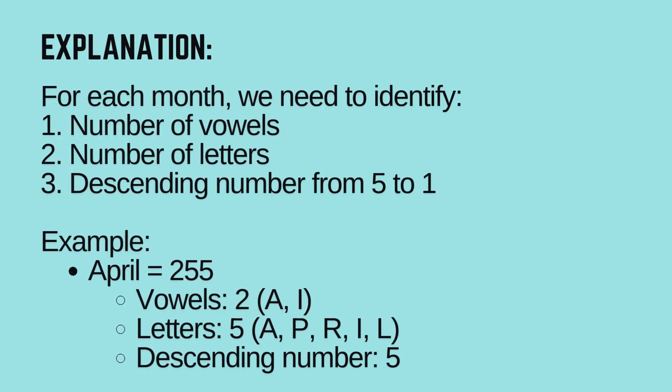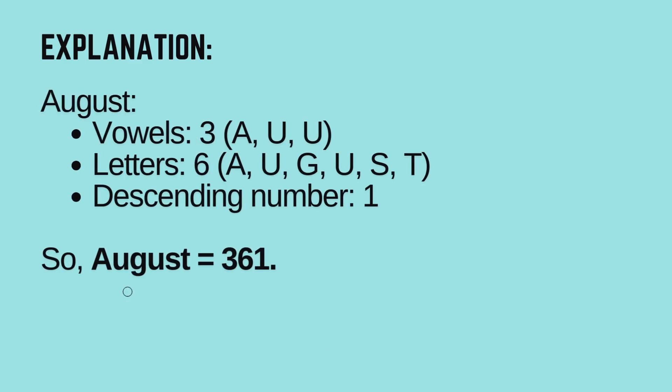Let's learn how. For each month, we need to identify: first, number of vowels in the month's name; second, number of letters in the month's name; third, descending number from 5 to 1. Given examples: April equals 255, vowels 2 (A, I), letters 5 (A, P, R, I, L), descending number 5. The same pattern applies to May through August. Now let's figure out the pattern for August: vowels 3 (A, U, U), letters 6 (A, U, G, U, S, T), descending number 1. So August equals 361.